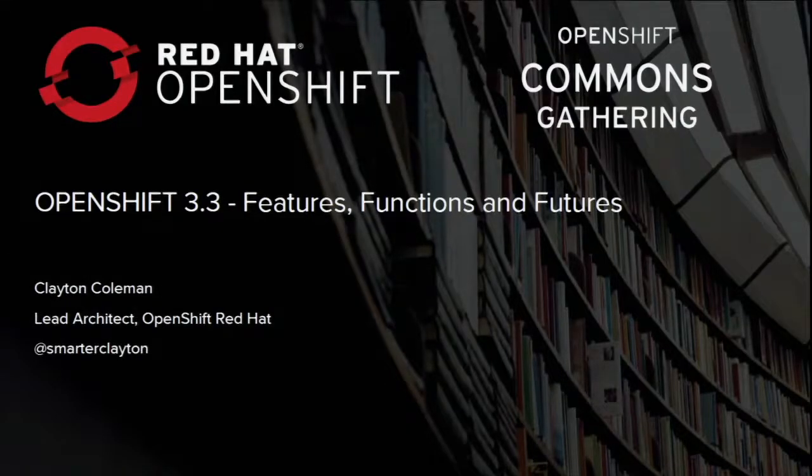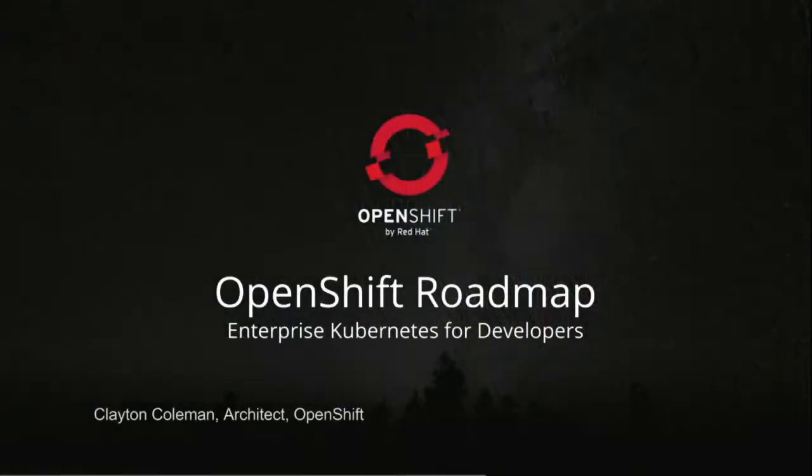Here to tell us about the future of OpenShift, Red Hat's own Clayton Coleman. For those of you who don't know me, my name is Clayton Coleman, architect for OpenShift. I've worked on OpenShift for about four years now, and I've worked on Kubernetes since it was started.